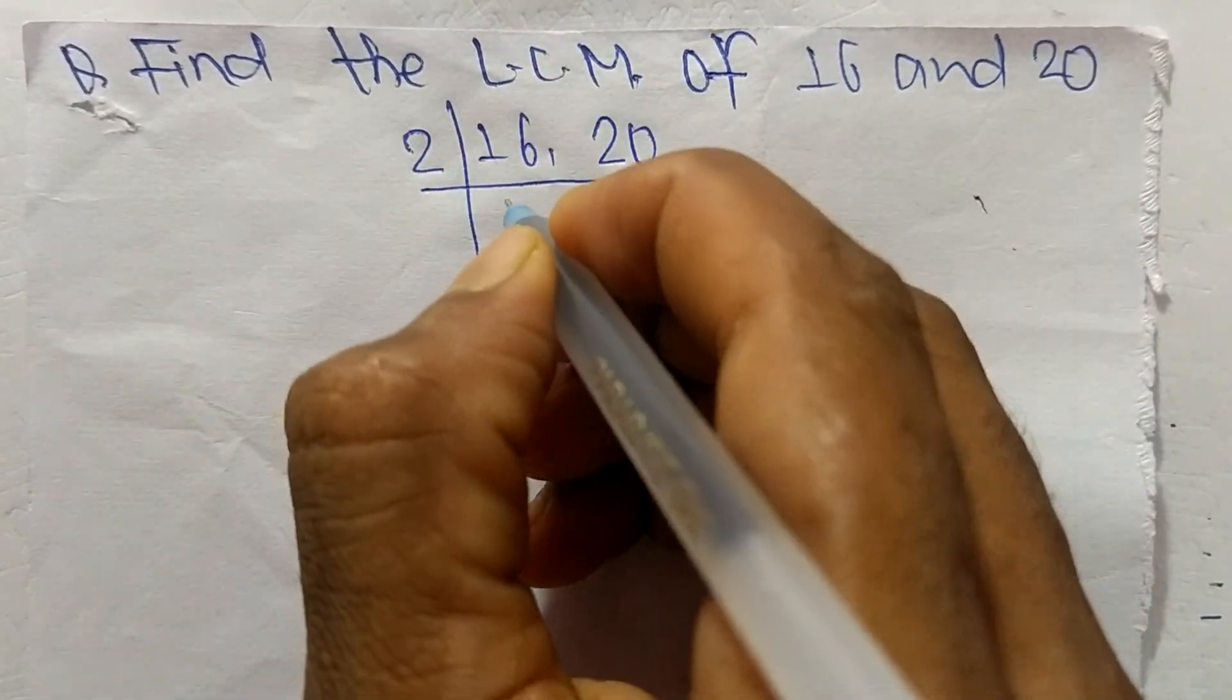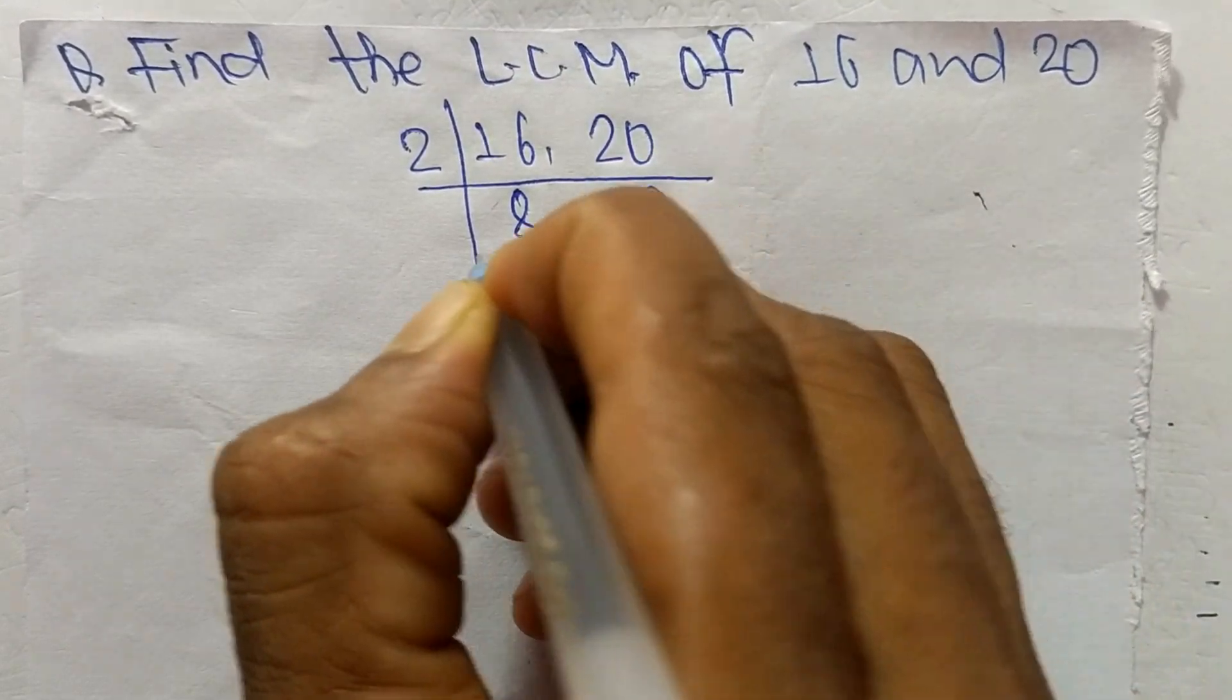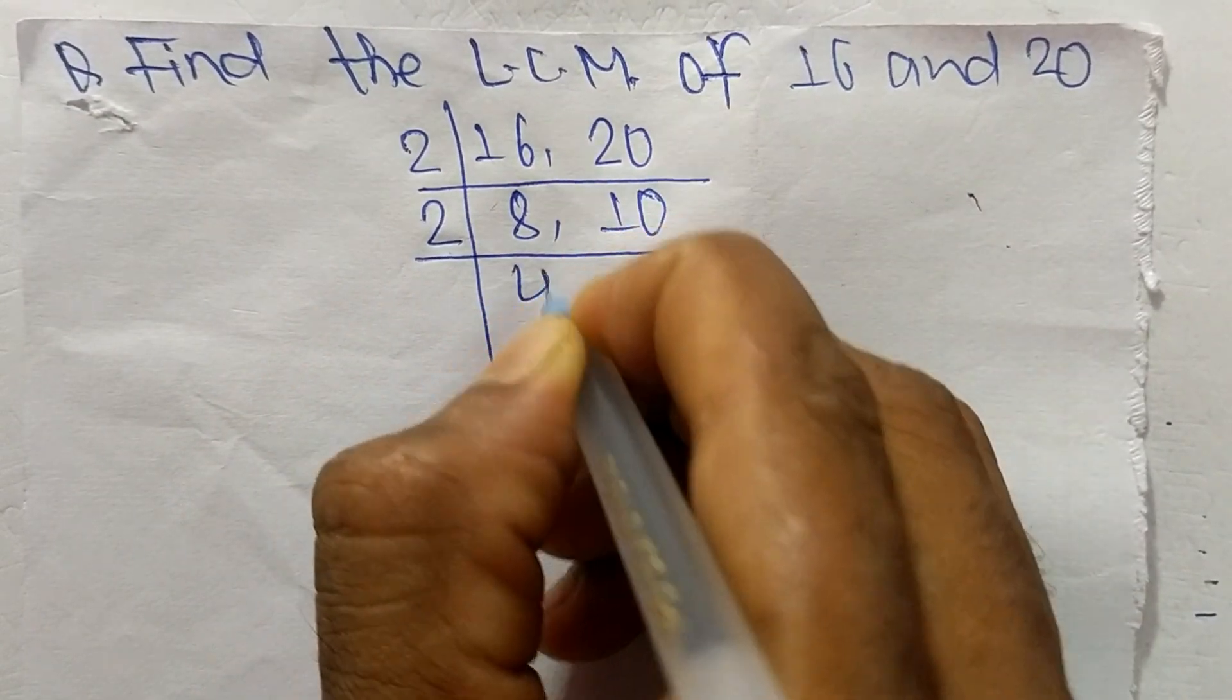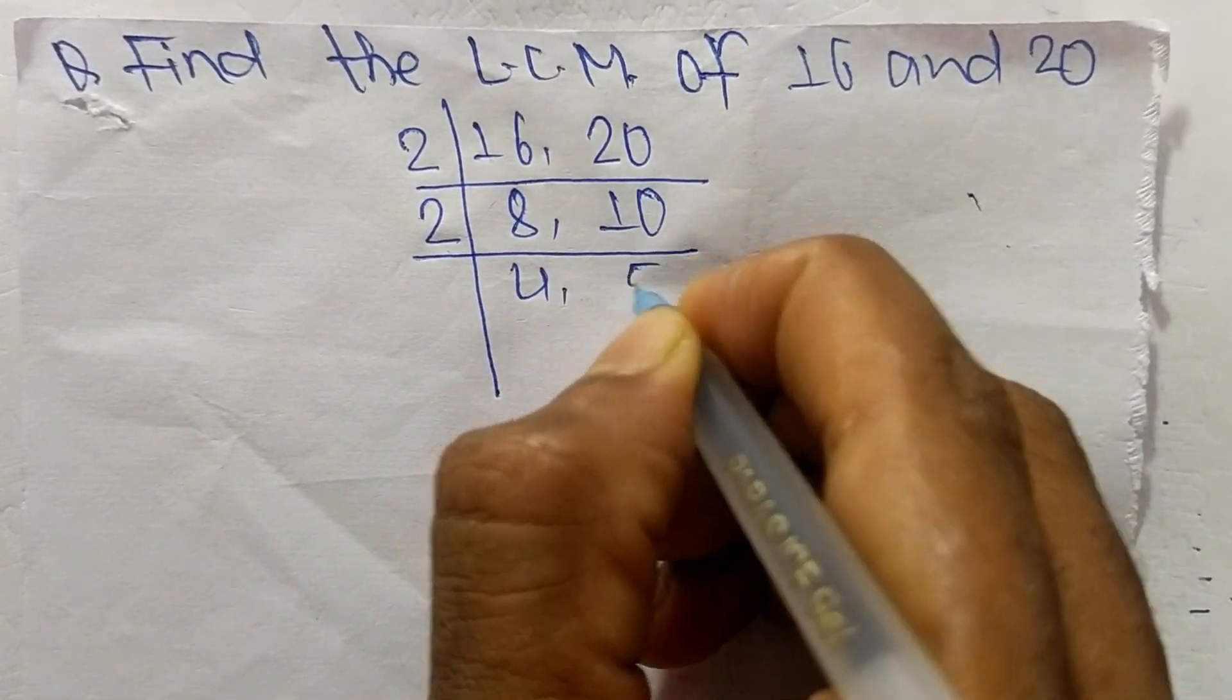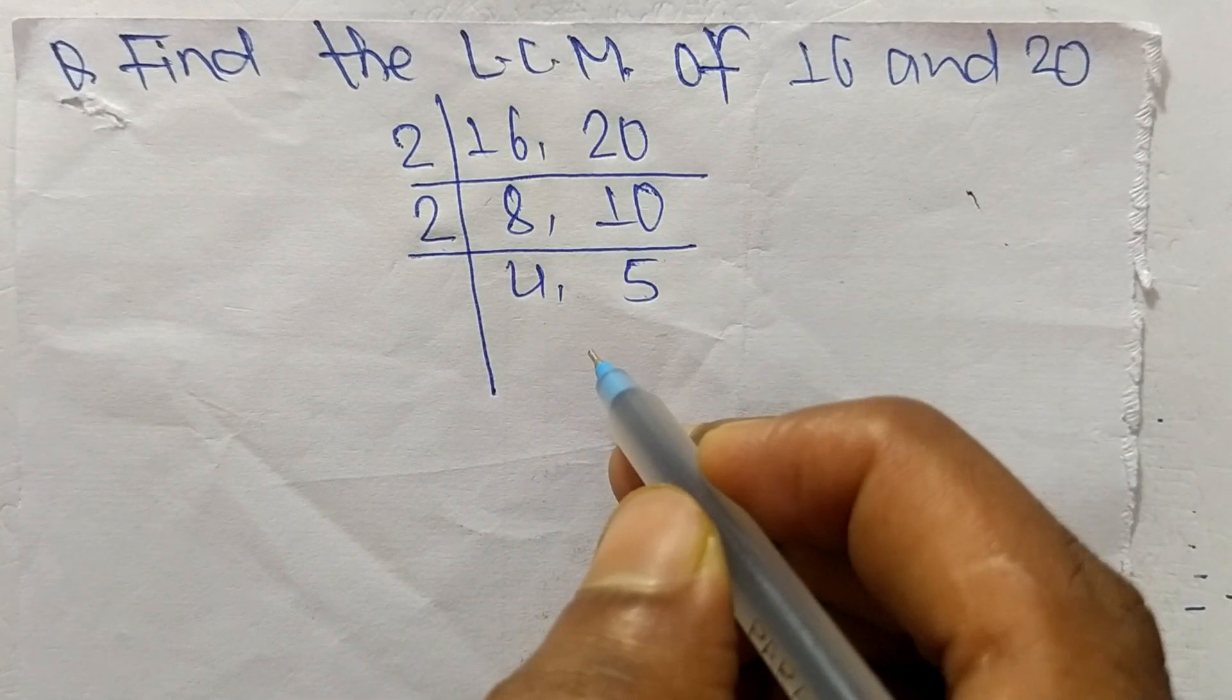2 times 8 means 16, 2 times 10 means 20. So again it is divisible by 2. 2 times 4 means 8 and 2 times 5 means 10. So we have here 4 and 5 which is not exactly divisible by the same number.